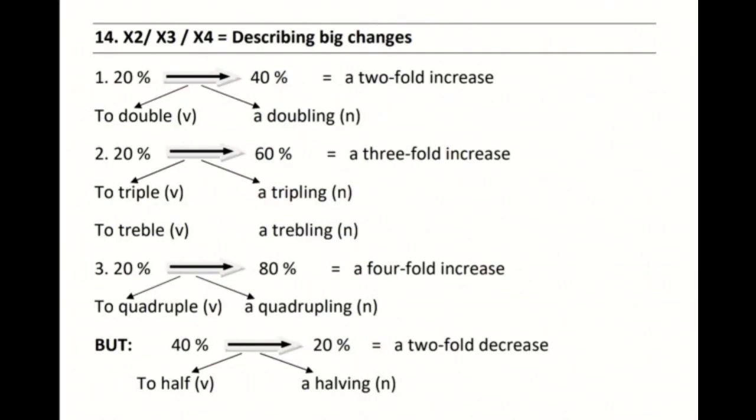The 14th segment talks about describing big changes — x2, x3, x4. X2 means a twofold increase; for example, a line increasing from 20 to 40 percent. The verb form is 'to double' — 'the line doubled from 20 to 40 percent'. The noun form is 'a doubling' — 'there was a doubling of something from 20 to 40 percent'. X3 is used when there's a threefold increase, such as a line graph increasing from 20 to 60 percent. The verb forms are 'to triple' and 'to treble', and the noun forms are 'tripling' and 'trebling'.